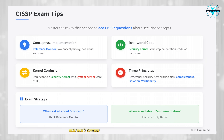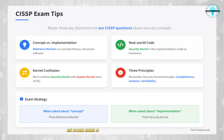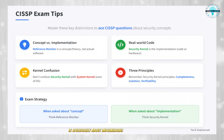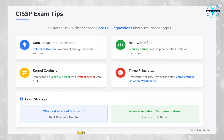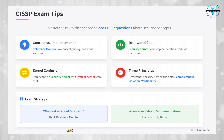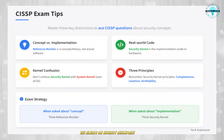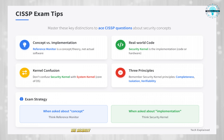Also, don't confuse the security kernel with the system kernel. The system kernel is the core part of an operating system that manages resources, while the security kernel is specifically about implementing the reference monitor concept — they're not the same thing. When analyzing exam scenarios, think in terms of the castle analogy: am I being asked about the big set of trusted things (TCB), the always-on security checkpoint (reference monitor), or the code that makes it all happen (security kernel)?